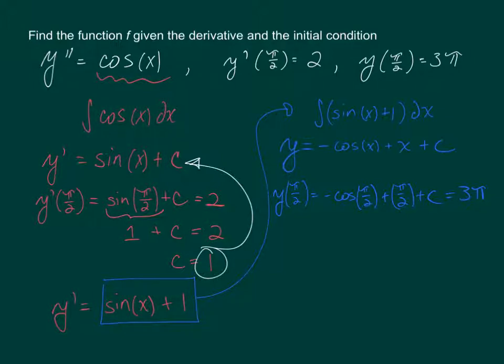And when you go through and simplify this equation over here, you'll see that the negative cosine of pi over 2 is 0 plus pi over 2 is just pi over 2 plus C equals 3 pi. And when you solve this for C by subtracting pi over 2 from both sides, C is 5 pi over 2.